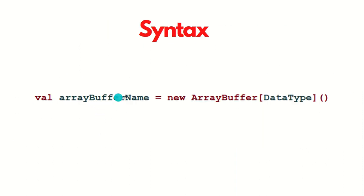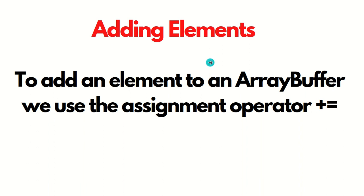Let's talk about the syntax. It's almost the same as arrays, but in this case there's no size being defined. So: val, space, array buffer name, equals, new ArrayBuffer, data type — and there's no size defined in the round brackets. To add elements to the array buffer, we use the += assignment operator. I'll be showing you a demonstration of creating, adding, and deleting elements in the Scala terminal.